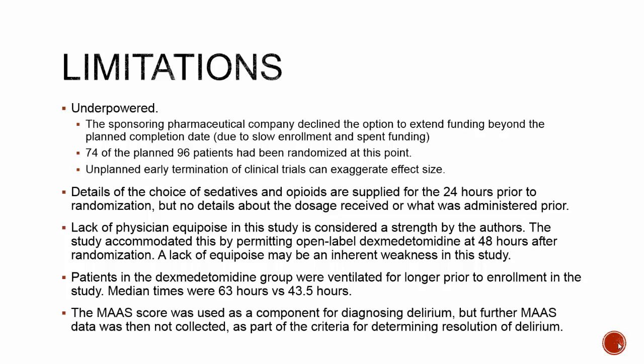Limitations: the study was underpowered — 21,000 patients were screened but only 74 of the planned 96 were enrolled, reportedly due to slow enrollment and spent funding. Details of sedatives and opioids for the 24 hours prior to randomization are provided, but dosages are unknown. The authors themselves call the lack of physician equipoise a strength, which may actually be a weakness. Patients in the Precedex arm were also ventilated 20 hours longer before enrollment, possibly indicating greater pre-enrollment severity.